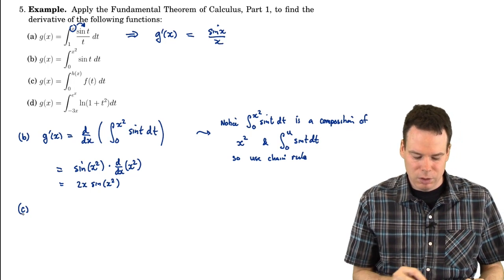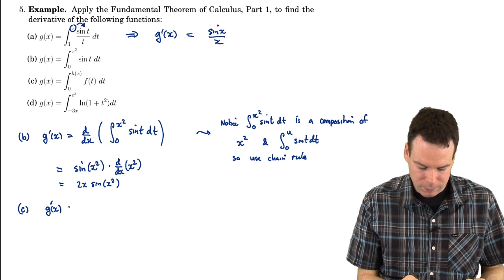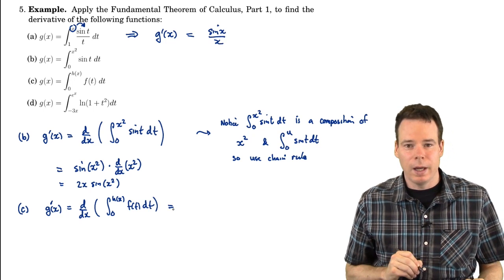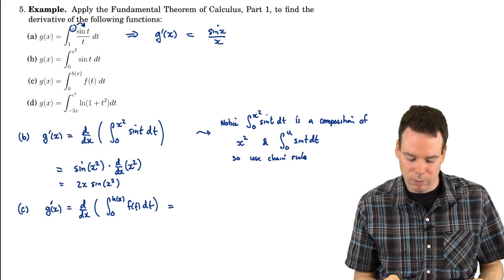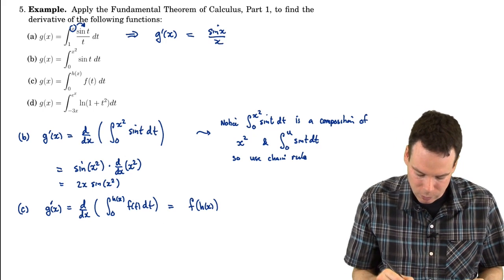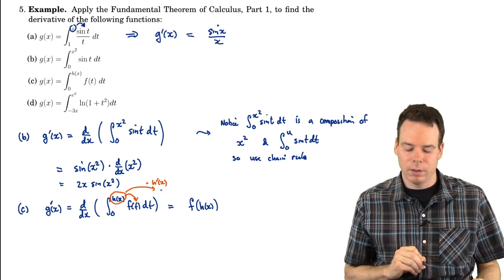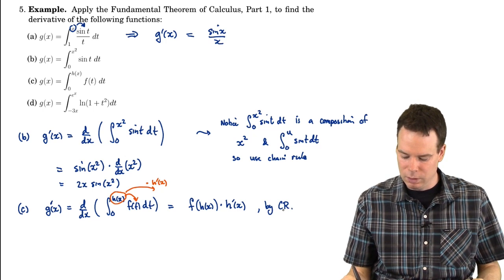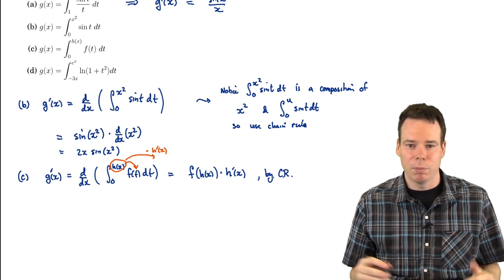Part c gives the general pattern for handling cases like part b. To compute the derivative of the integral from 0 to h(x) of f(t) dt, differentiate the outside function (the integral), which gives f of whatever is inside — namely f(h(x)) — and then multiply by the derivative of the inside, h prime of x. The Fundamental Theorem differentiates the outside integral, and the chain rule pieces the derivatives together.